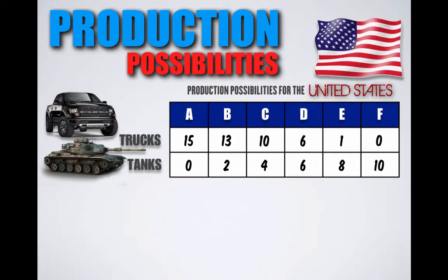Let's do a little more practice. Here we have a function that shows us the production possibilities for the United States. Given its current level of resources, the United States can produce 2 goods — trucks or tanks. Do you recognize this dilemma? This is a classic guns-or-butter dilemma: you have consumer goods (trucks) and military goods (tanks). The United States with its given resources can only produce these 2 goods in various combinations listed, and must carefully choose based on social values and needs which combination to produce.